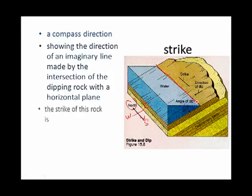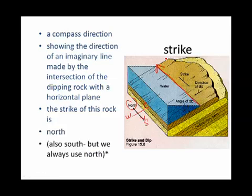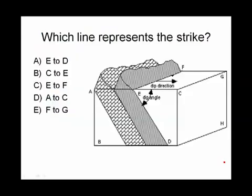That has a strike. In this case, the strike of this rock is north. That direction. Well, I'm sure you're saying to yourself, how come that can't be south? The answer is, sure, it could be. But geologists like to keep things simple, so we just say north and don't worry about it. So what line here represents the strike? Well, it would be from E to F. There you go.